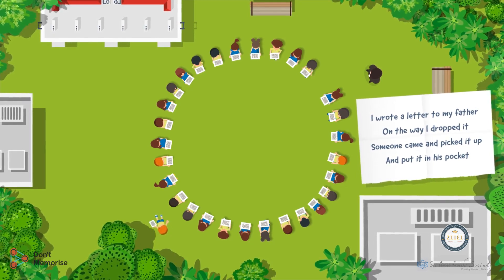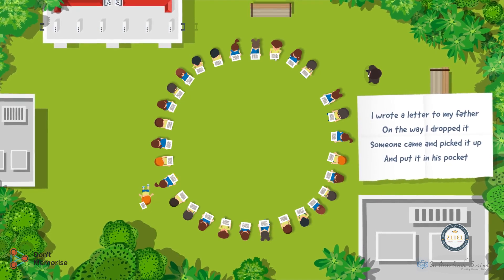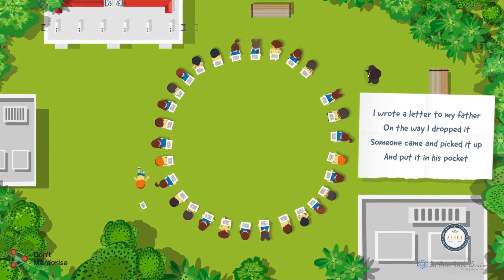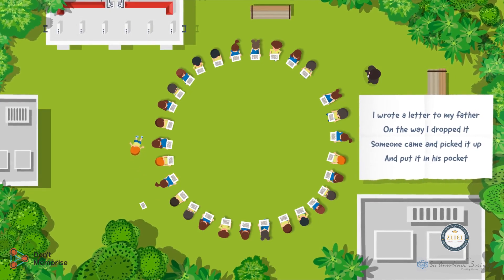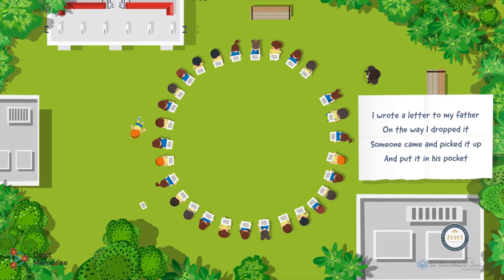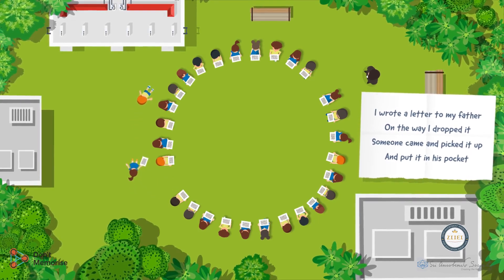The student who is running will randomly drop his letter behind any other student. Once the song is over, the students in the circle will need to check behind them for that letter. The student who finds the letter behind them will then get up and start running behind the first student to give their letter back.